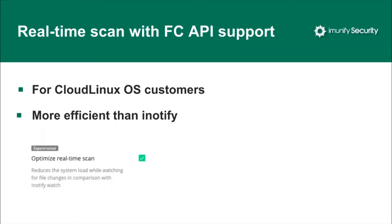Let's start with the real-time scan changes. When you enable the optimized real-time scan option in the settings, Immunify 360 switches from iNotify service to either FA Notify or File Change API. Both are more efficient than the common iNotify service for watching file changes, reducing load on the file system and making real-time scan quicker. The File Change service is available on CloudLinux OS by default — it's fast and lightweight, so when supported it's utilized by Immunify 360; otherwise FA Notify is used.